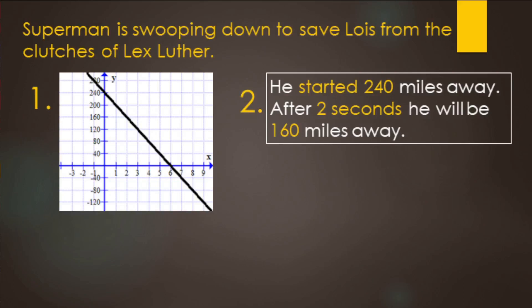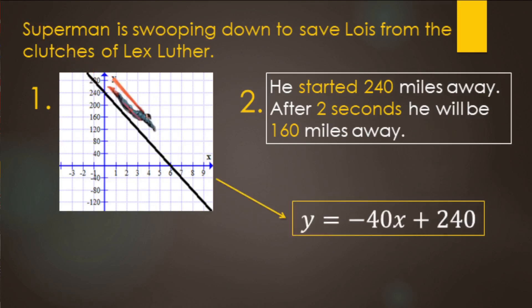In this video, we're going to be starting with a graph where we can clearly see the y-intercept and then rewriting that in slope-intercept form. And then also, if we have a start amount on a word problem or story problem, and then another piece of information, also rewriting that as an equation in slope-intercept form.